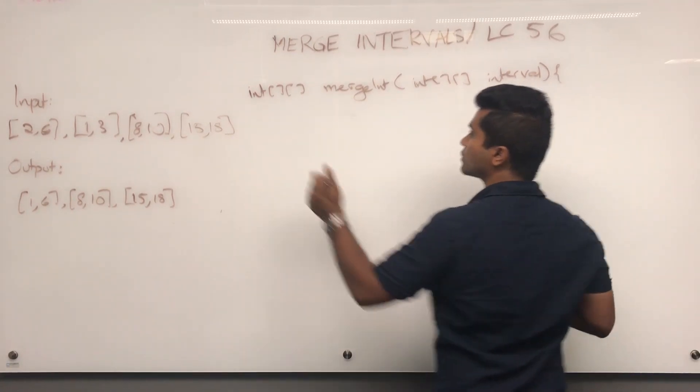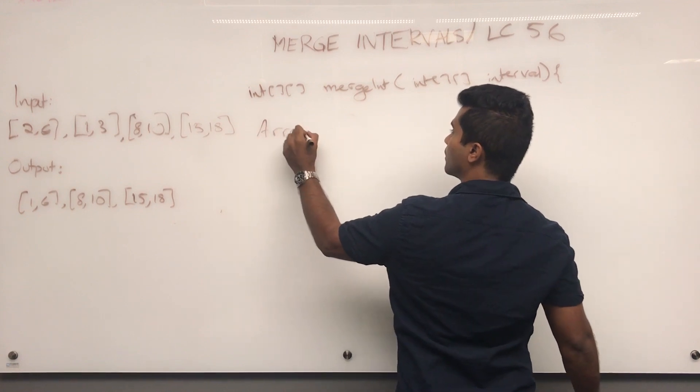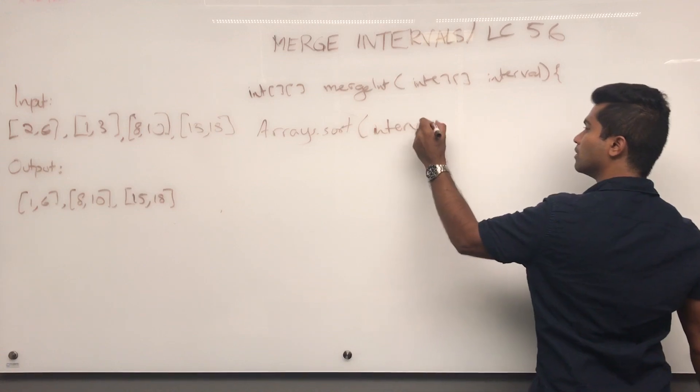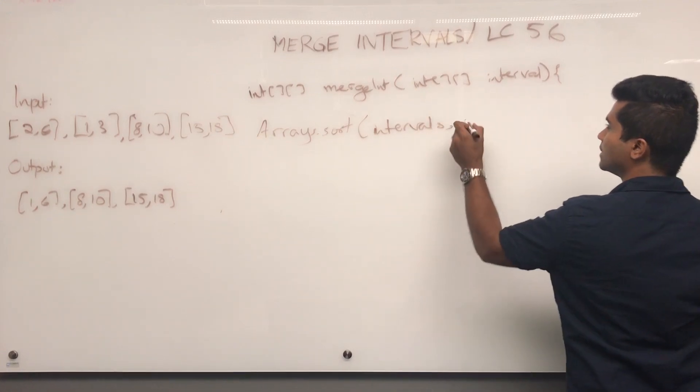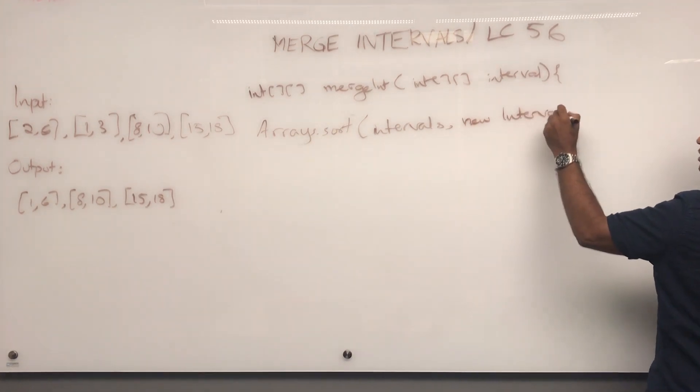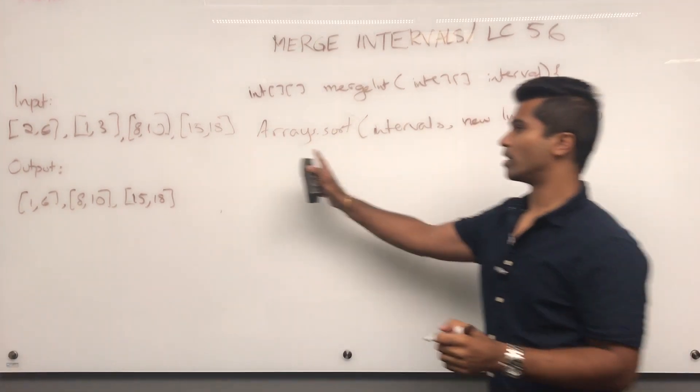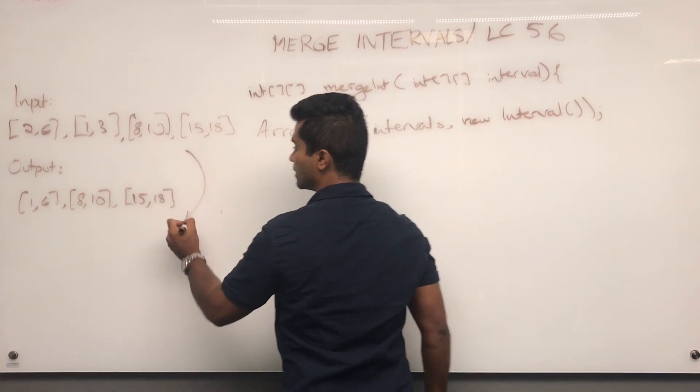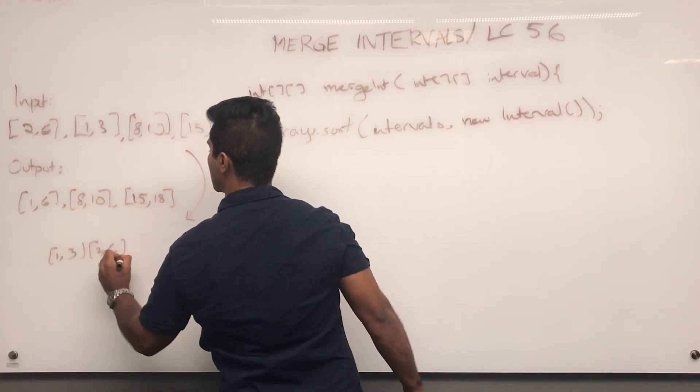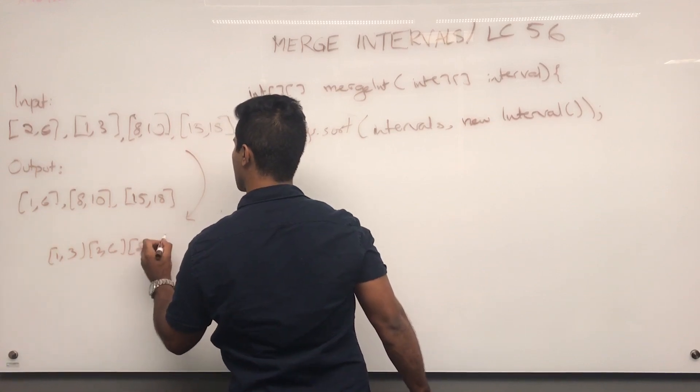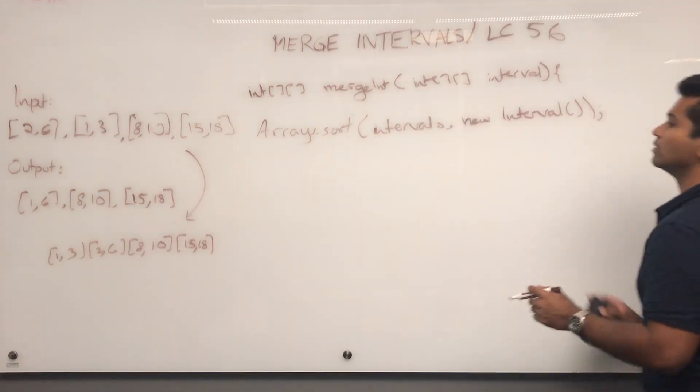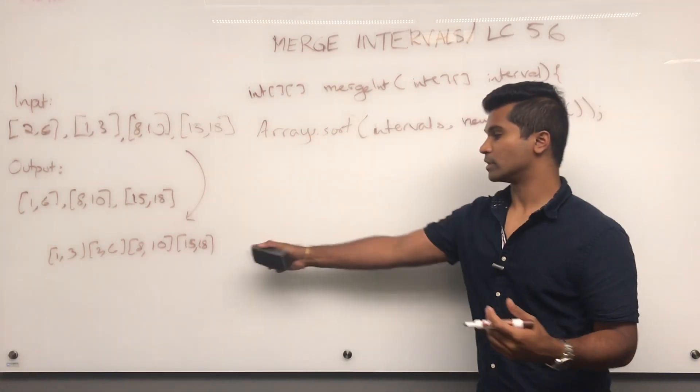So first, let's sort the given array. Arrays.sort, this is called intervals, and I'll use the class I wrote earlier, new interval, which is going to be passed in as the comparator. Now that I passed this in, this is going to be sorted: 1, 3, 2, 6, 8, 10, 15, 18. So what we always do is, once the sorting is over, we have to figure out how we're going to merge them together.